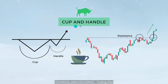Next is cup and handle. This pattern looks like a cup with a handle. When a stock forms a cup-like pattern and takes resistance at a point, you just have to wait for the formation of the handle. Once this resistance is broken, a trader can go for a long. Cup and handle pattern is always expected to be bullish. I hope you are clear with this cup and handle pattern.